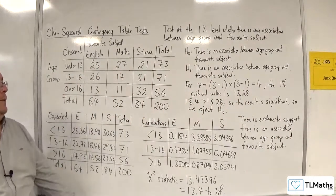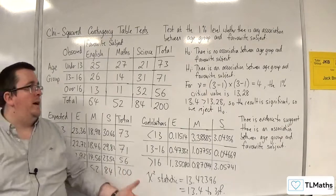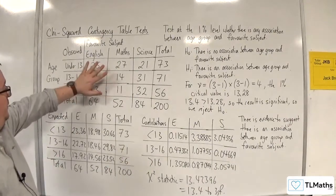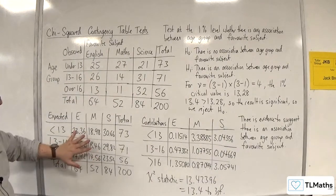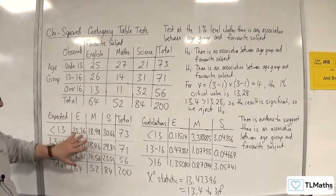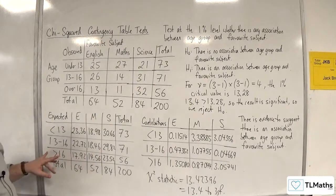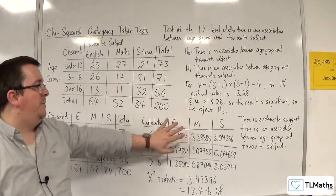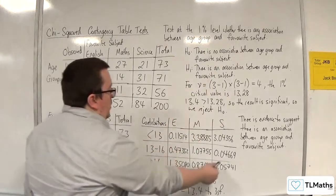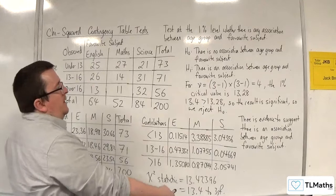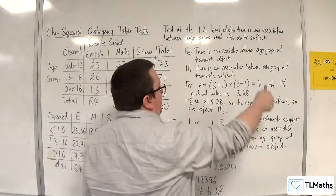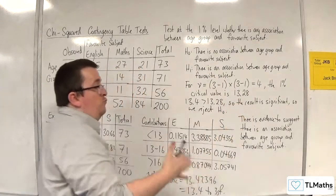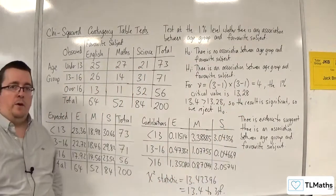And so that is how we can do the complete chi-squared contingency table test. Starting off from the observed frequencies, we calculate the expected frequencies using the totals. The totals here are for checking purposes. Then we use those two tables to create the contributions table. We then add up all of our contributions to get the chi-squared statistic and then we perform the hypothesis test comparing your chi-squared statistic against the critical value that's read from the formula booklet tables.